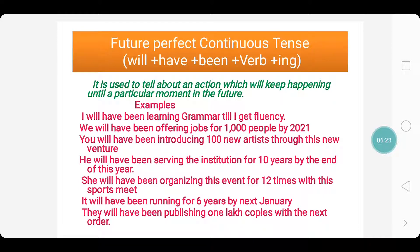We will have been offering jobs for 1,000 people by 2021 — that means we are in the process of offering jobs, the number hasn't reached 1,000 yet, and by 2021 we will reach the target. You will have been introducing 100 new artists through this new venture. He will have been serving the institution for 10 years by the end of this year — meaning the ninth year of his service is running and by year end he will reach 10 years. She will have been organizing this event for 12 times with this sports meet.